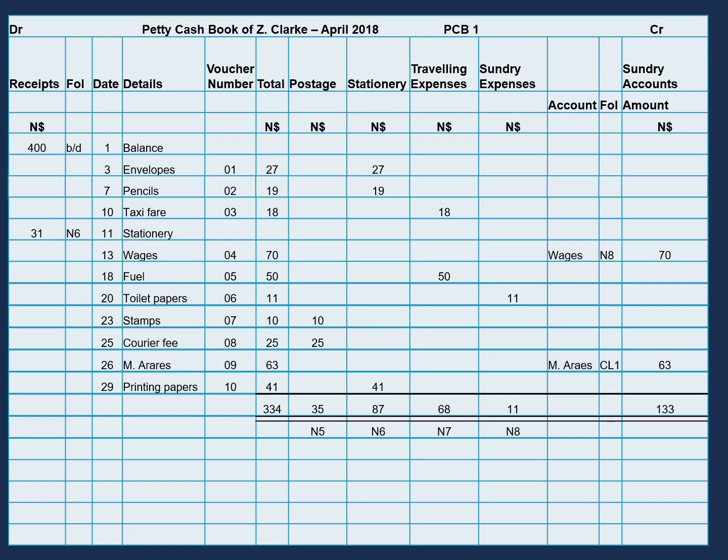Now let's go ahead and enter that. So on the 31st, we will restore our petty cash book with $303. The description in the details column will be cash. And in our folio column, we will enter CB1, which stands for cash book.